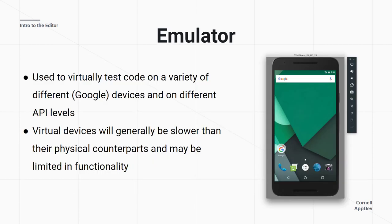An emulator is a virtual device you can use to test your code. Devices come as Nexus or Pixel images, and you can test on different API levels to see how your code works on lower or higher versions. Generally virtual devices are slower than physical devices — they take longer to boot and code runs slower. For complex apps it may make more sense to test on a physical device. For example, when coding Eatery the map feature would not show up at all on a virtual device.